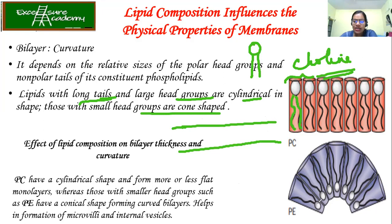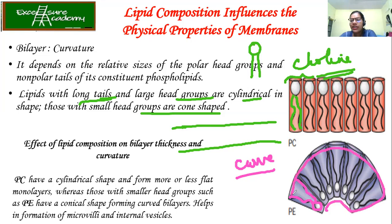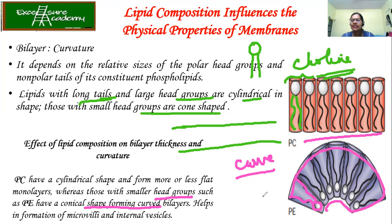On the other hand, if you have small heads with unsaturated fatty acid chains, then the membrane takes the shape of a curve — it forms a conical shape. You can see the difference: where PC is present it is flat, but with PE (phosphatidylethanolamine), which has a smaller head group, it takes the conical shape of the plasma membrane.